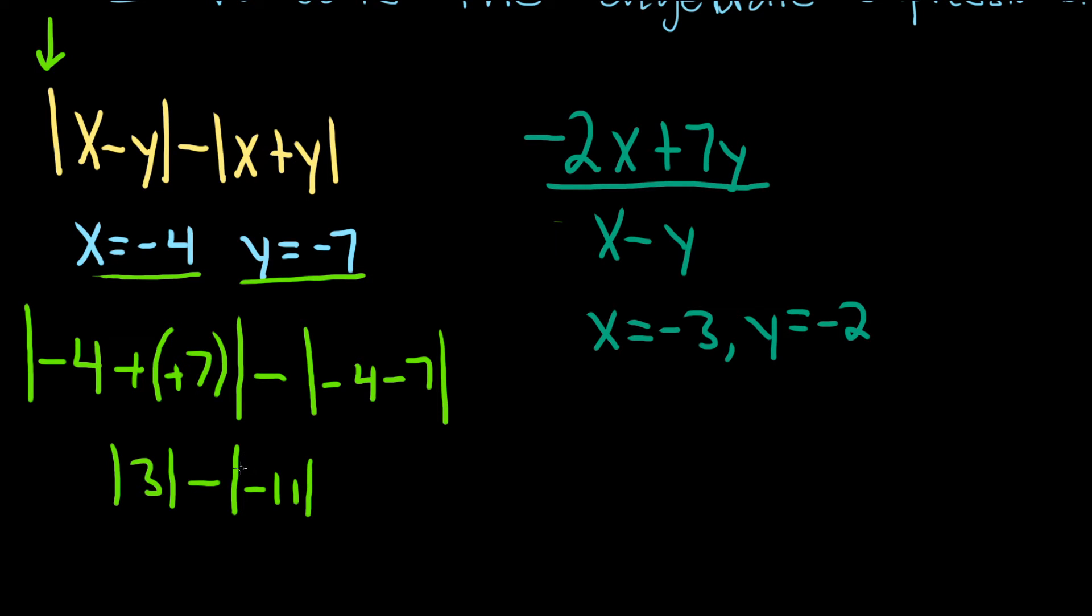Now the absolute value of negative 11 is 11. A couple ways to think about it: you can think of it as the distance between negative 11 and 0, which is 11. Or you can just memorize it like I do. Whenever you have a negative inside an absolute value, it goes away and you just get the positive number.